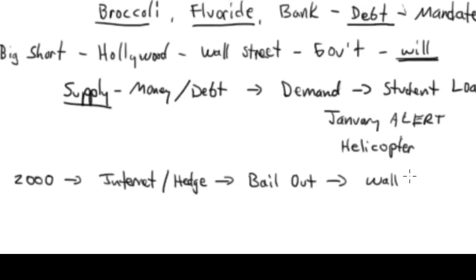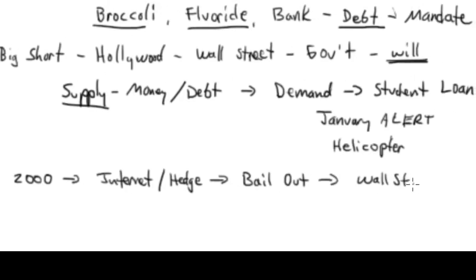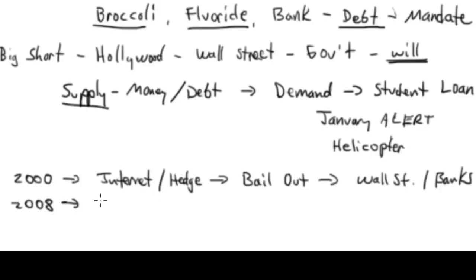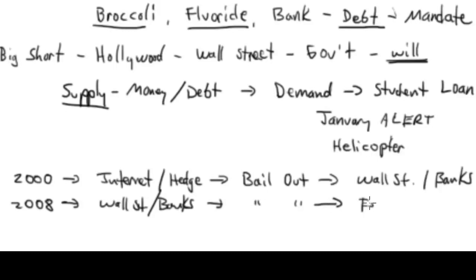Then in 2008, what was the cause and effect? It was these exact same Wall Street banks — Wall Street and the banks cratered, Lehman going under and a bunch of other lending institutions. Who bailed them out? Well, the Federal Reserve did.